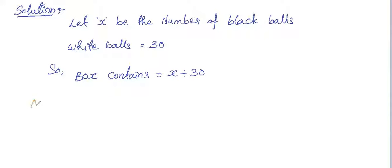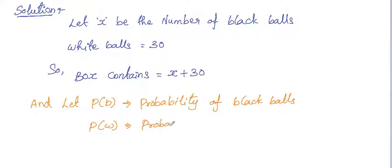Given the probability of drawing black balls equals to the two-fifths of the white balls, so let P(B) be the probability of drawing black balls and P(W) be the probability of drawing white balls.